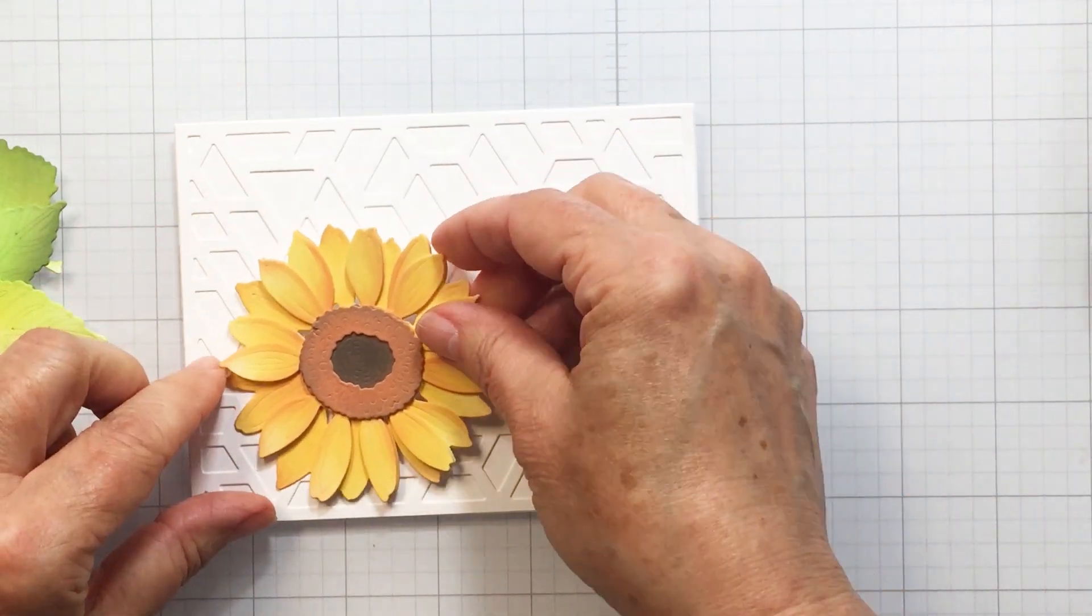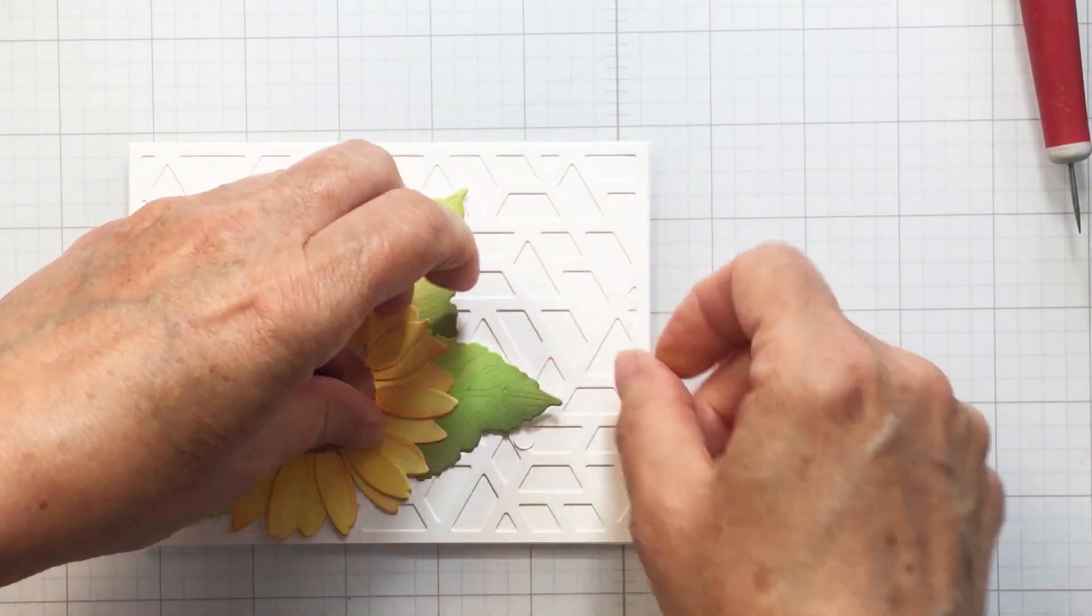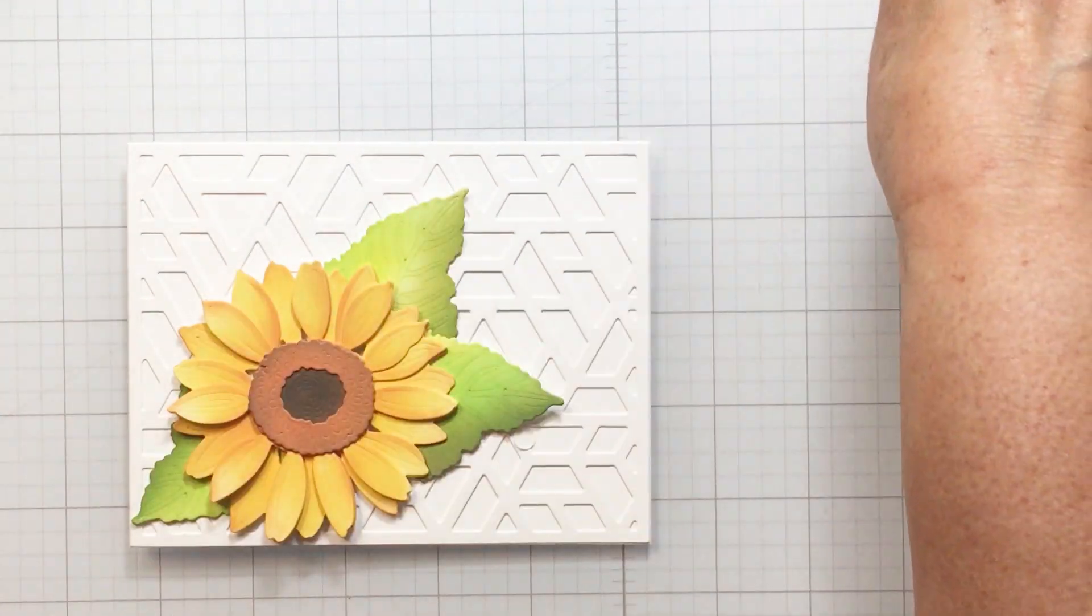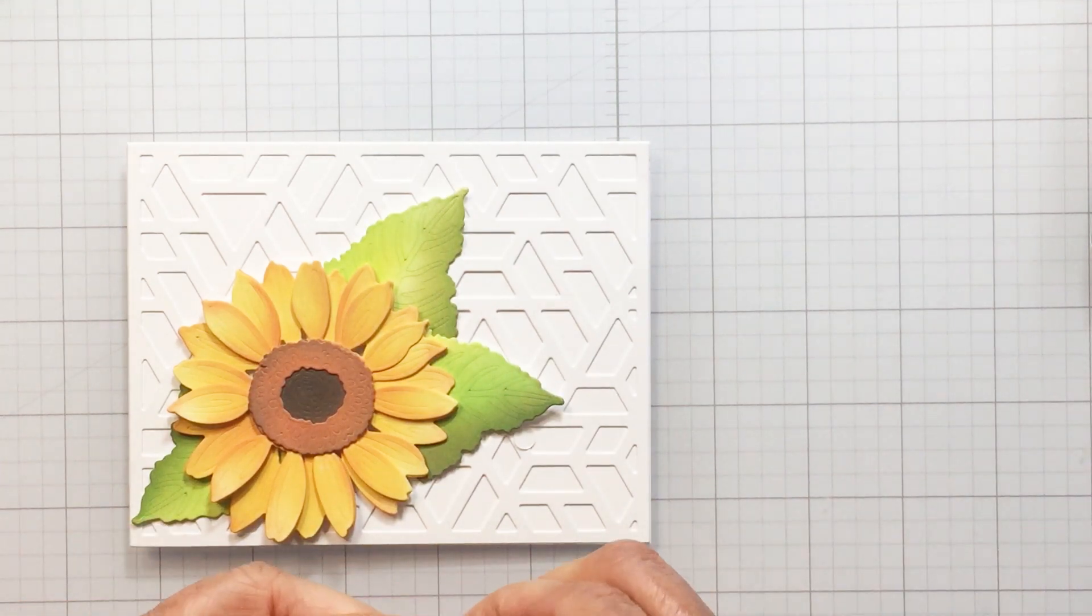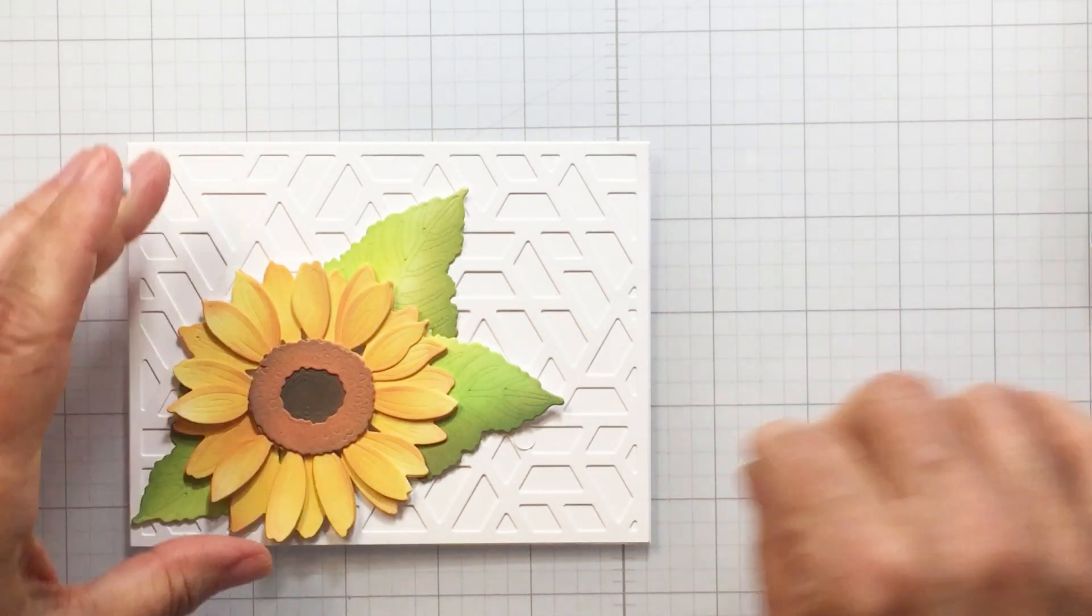It works really easy and I love how these just look so beautiful when you add them to a card. I did add each of these different pieces with a little bit of foam adhesive and just adding a little bit of foam adhesive to the very tips of those leaves.